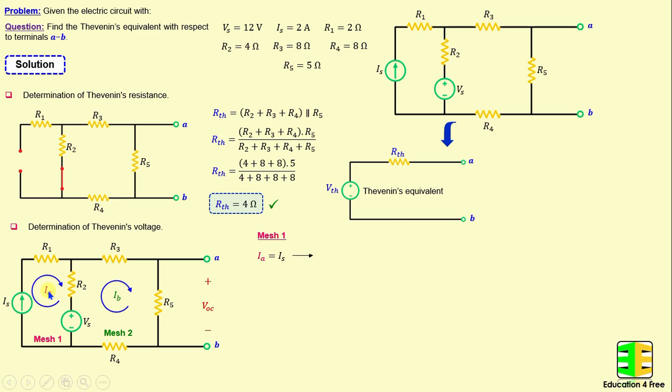And in mesh 2, by applying Kirchhoff's voltage law in mesh 2, we can write R2 times Ib minus Ia plus R3 times Ib minus Vs plus R4 times Ib plus R5 times Ib is equal to 0. And if we replace the resistors and the voltage with their numerical values, and we continue simplifying this equation, we obtain 25Ib minus 4Ia minus 12 is equal to 0.